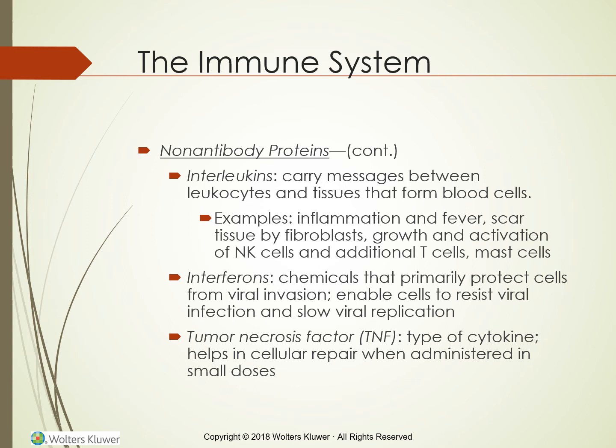Cytokines are chemical messengers released by lymphocytes, monocytes, and macrophages. Subgroups include interleukins, interferons, tumor necrosis factor, and colony-stimulating factors. Interleukins carry messages between leukocytes and tissues that form blood cells; some enhance the immune response while others suppress it. Examples of interleukin activity include: promotion of inflammation and fever, formation of scar tissue by fibroblasts, growth and activation of NK cells and additional T-cells, production of mast cells, growth of B-cells, formation of plasma cells and production of antibodies, formation of new blood vessels known as angiogenesis, and stimulation of the anterior pituitary gland to secrete corticotropin.